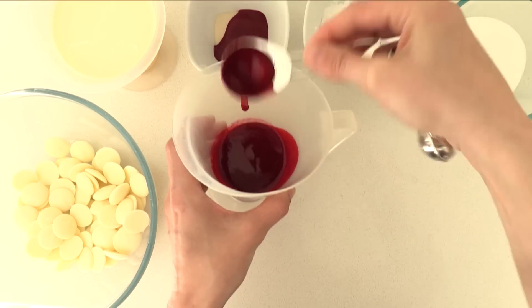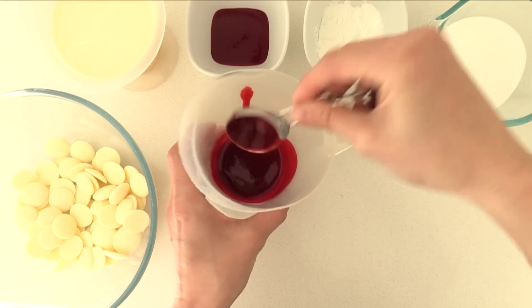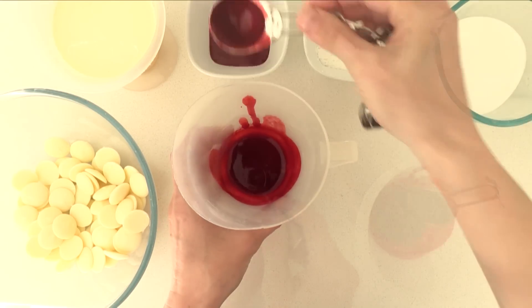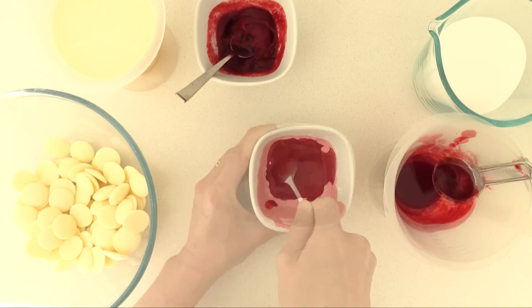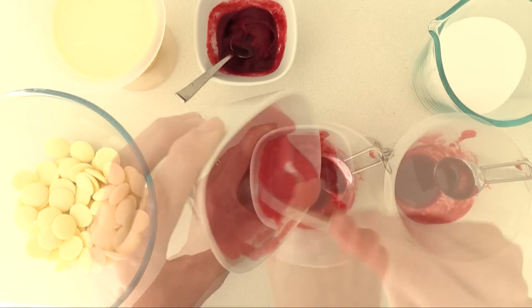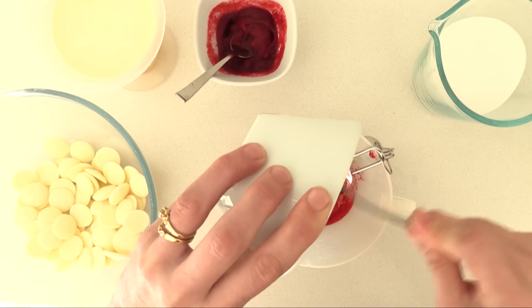Add 3 tablespoons of the puree to the gelatin and stir it through until it is smooth. Set that aside and then add 3 tablespoons of the puree to the corn flour and mix that until it has no lumps and then pour it into the rest of the puree and stir it through.